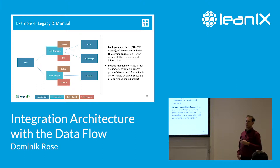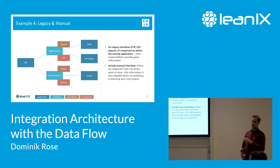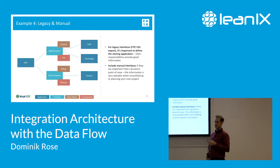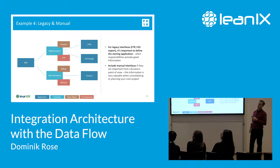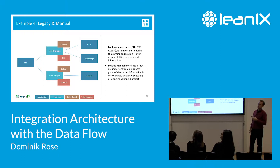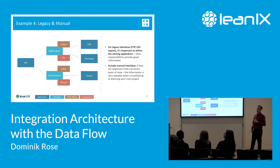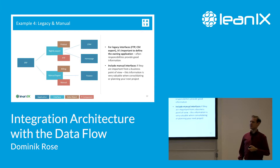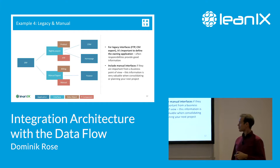Those were the four examples and constellations I wanted to share. Manual interfaces — there's often a colleague sitting this way and another sitting that way passing information. It's a good idea to model this because it gives valuable information for consolidation and where you could automate. So let's walk through the tool and do step-by-step data flow analysis.